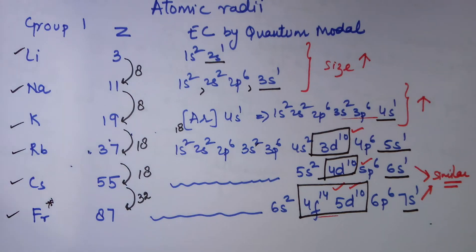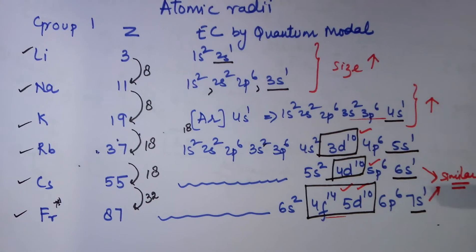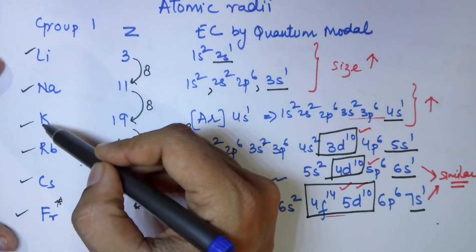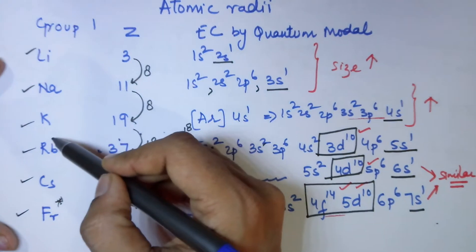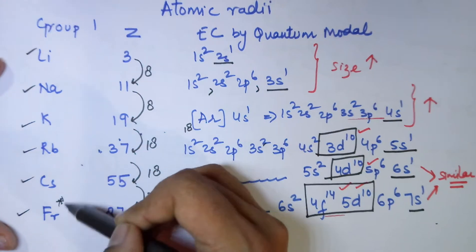As we move from Group 1, top to bottom, we come across the elements lithium, sodium, potassium, rubidium, cesium, and francium.